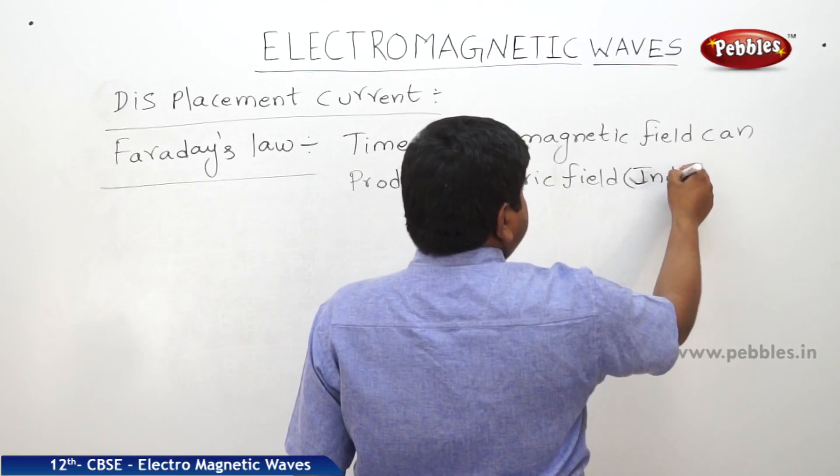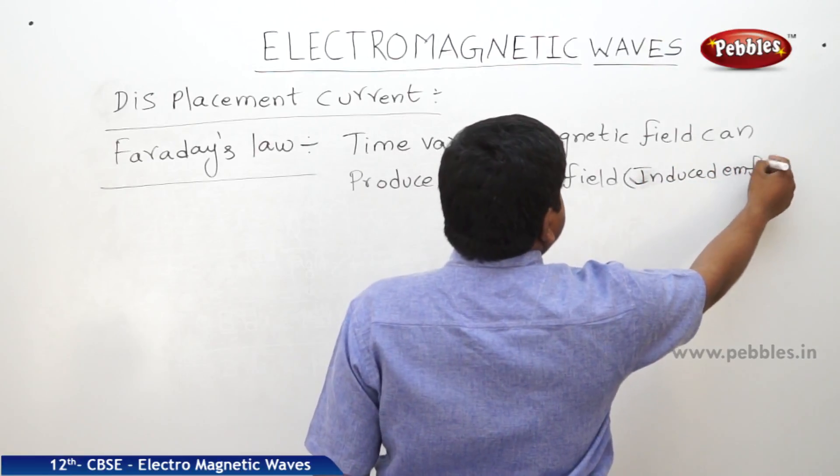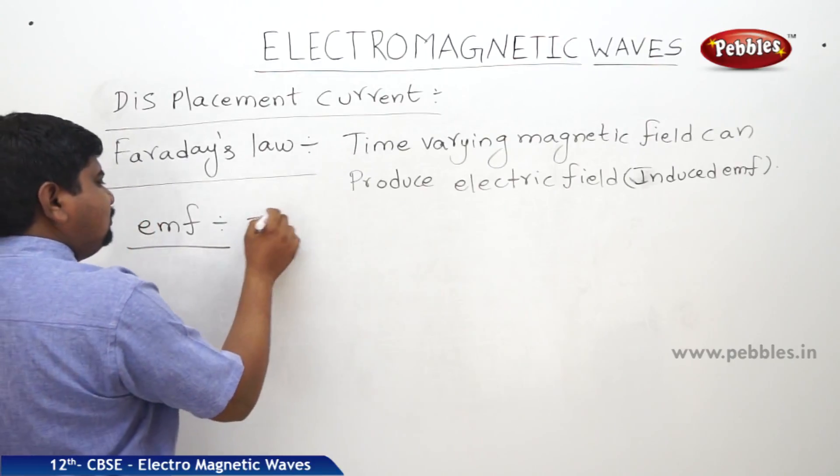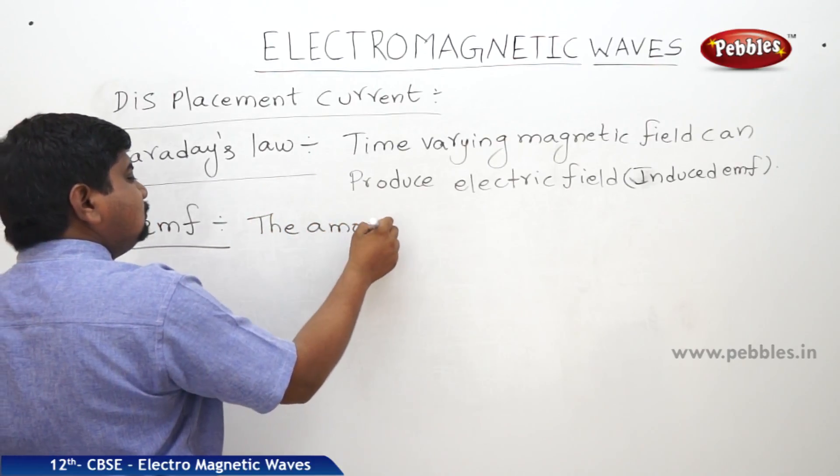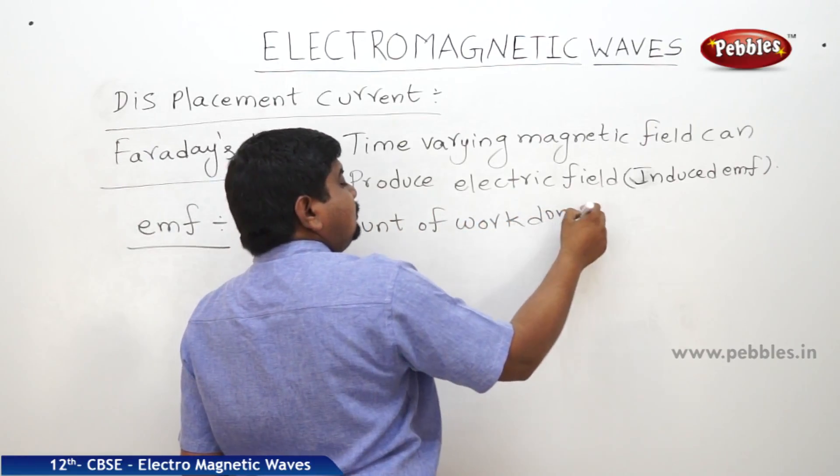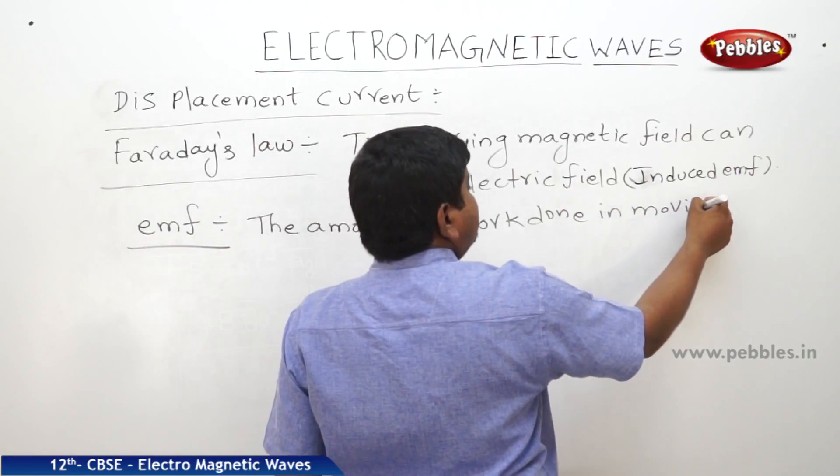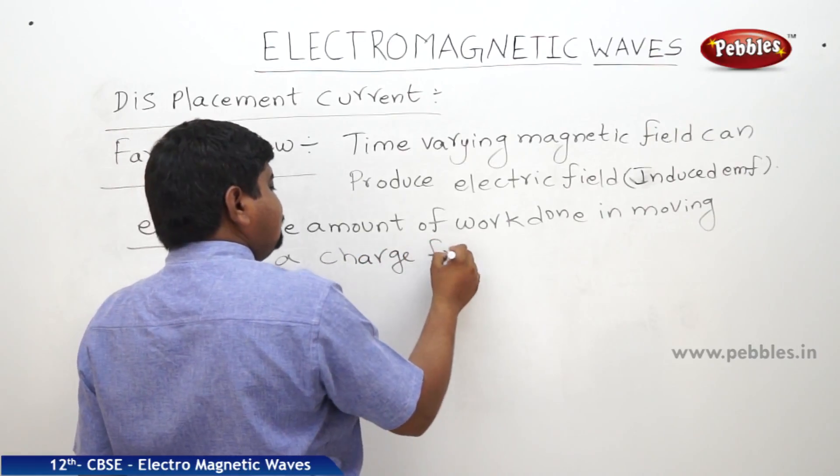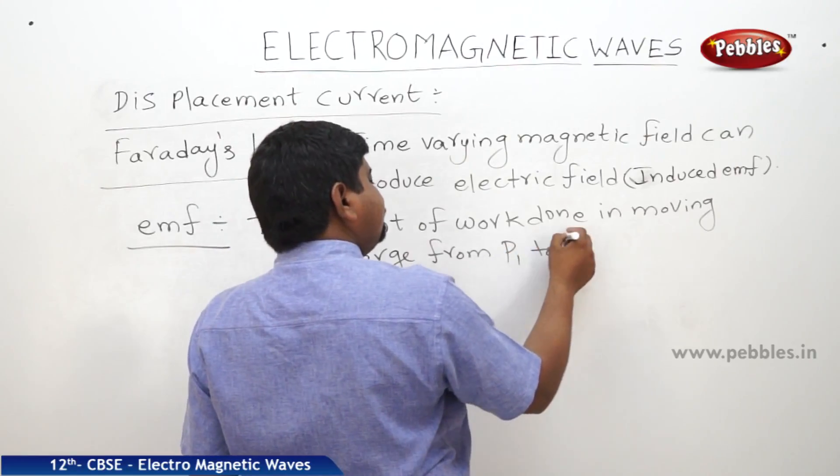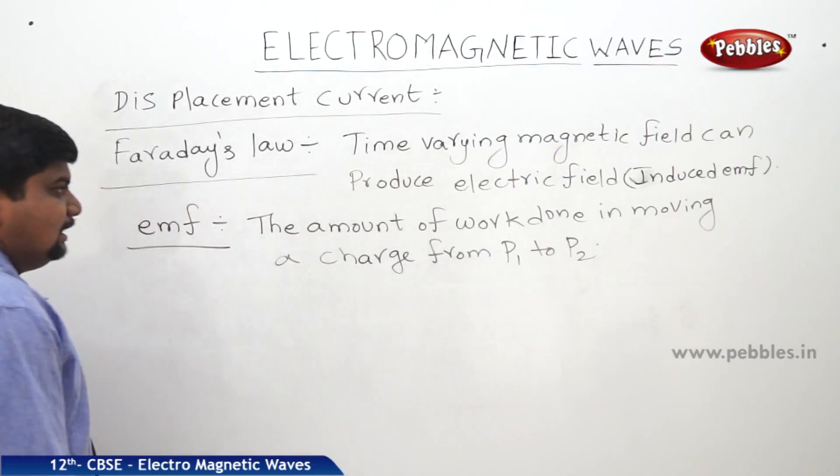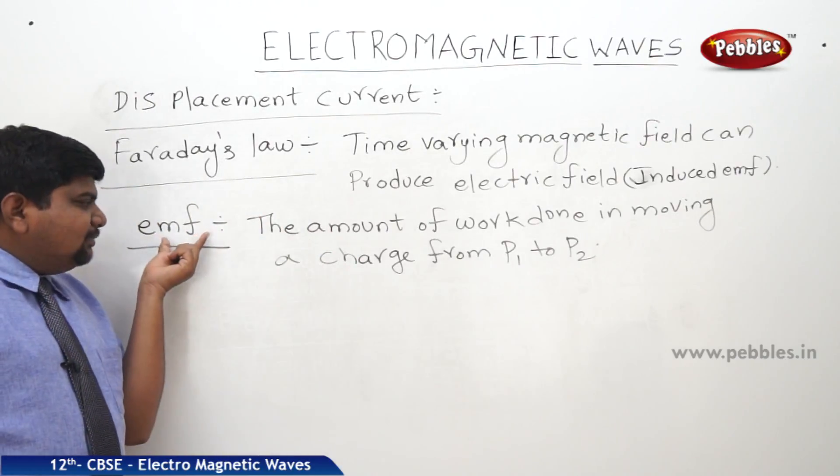We can write induced EMF. But what is EMF? EMF is nothing but the amount of work done in moving a charge from P1 to P2, where P refers to position. Position 1 to position 2. That means, charge exists, EMF will exist.